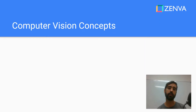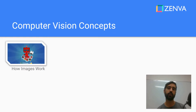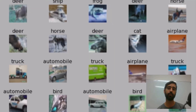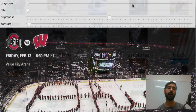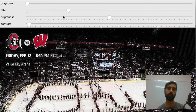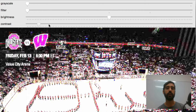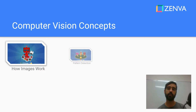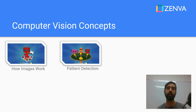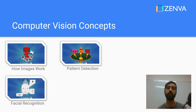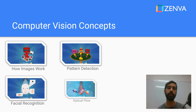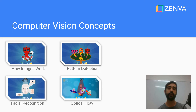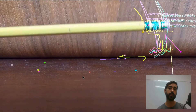One of the core concepts in computer vision is understanding how images work. You need to understand how images are represented in the computer, how you can manipulate them, and that will give you the tools to build upon and take on more advanced topics such as detection of patterns, edge detection, and even facial recognition, and also areas such as video and optical flow — for example detecting an object that is moving in a video.